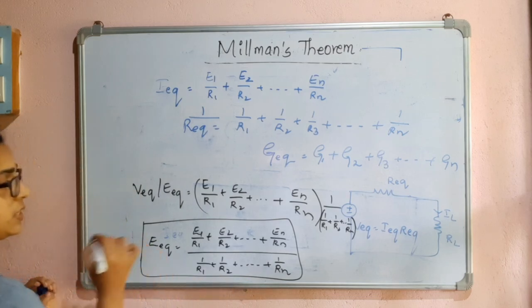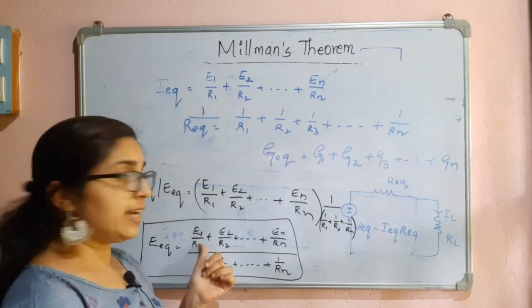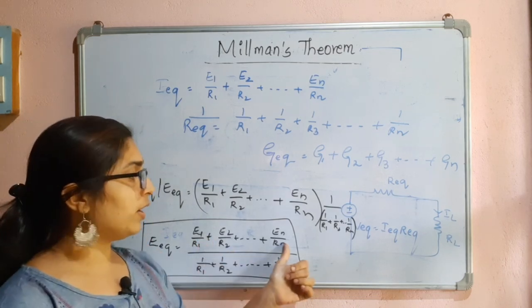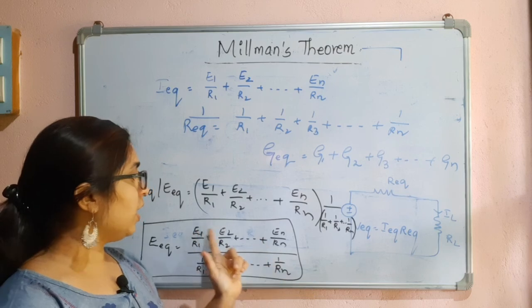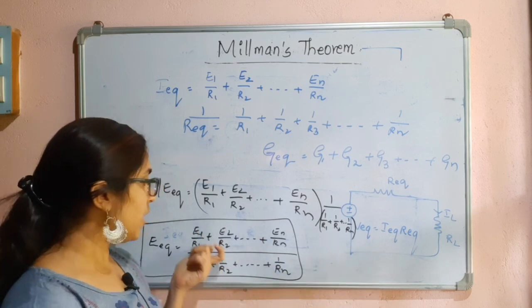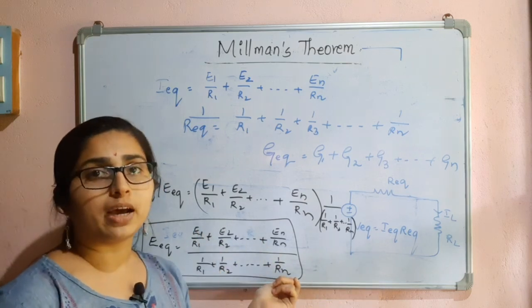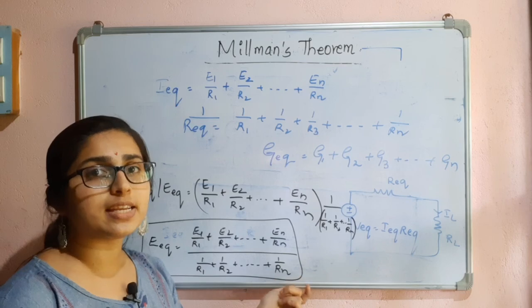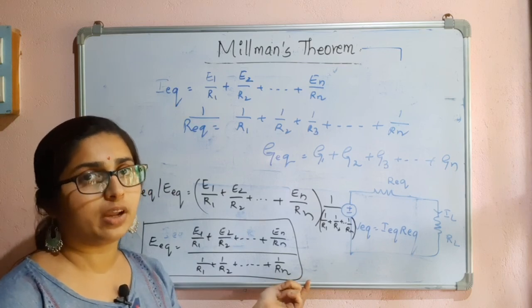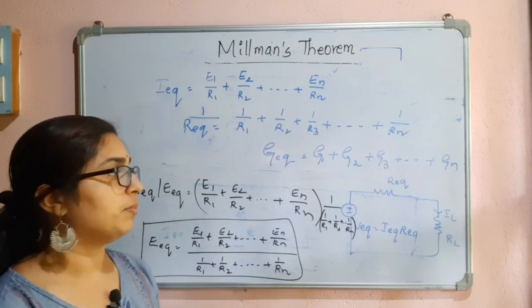This formula is very easy to remember. In the numerator, write the currents E1/R1, E2/R2, and so on. In the denominator, just write 1/R1 + 1/R2 + ... + 1/Rn. This is the Millman's theorem formula, and R_equivalent is simply the parallel combination of all the resistances.